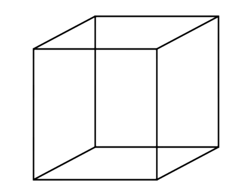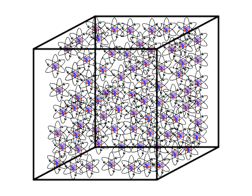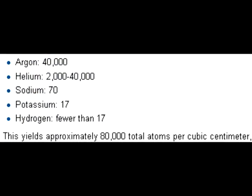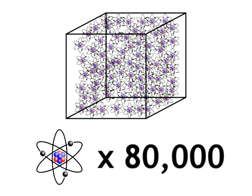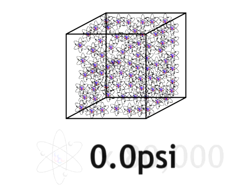To measure density we measure in atoms per cubic centimeter — how many atoms of any given element are packed into each cubic centimeter of space. The lunar atmosphere consists mostly of argon and helium and has a density of 80,000 atoms per cubic centimeter. 80,000 atoms may sound like a lot, but in terms of atmospheric pressure it only works out to be 0 psi, making it virtually non-existent.